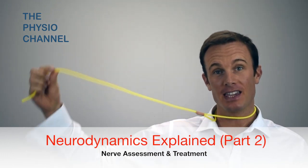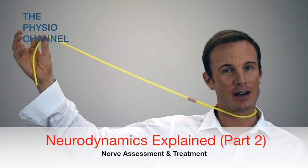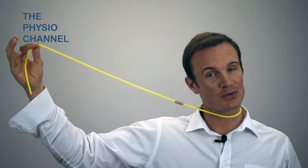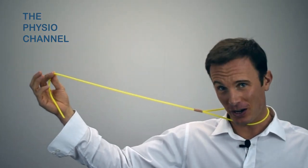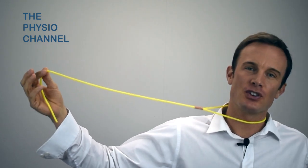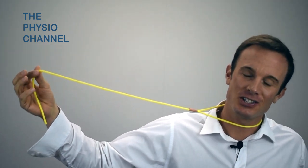Hello and welcome back to part two of the NeuroDynamics Explained series. Let's start with why I have a yellow elastic cord tied around my neck. Well, it's supposed to represent a peripheral nerve and should help me explain the concept of neural sliders and tensioner techniques.